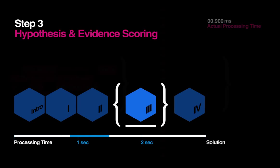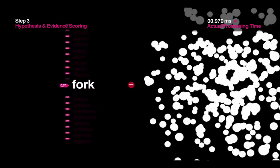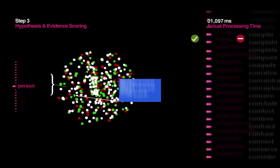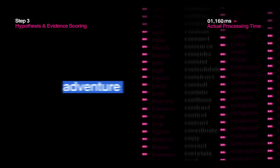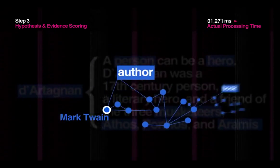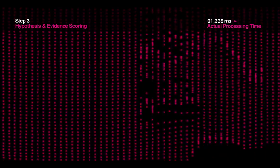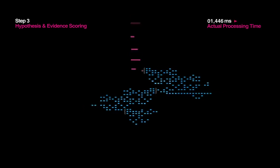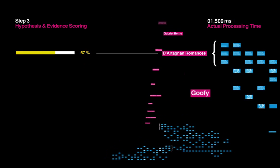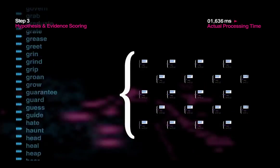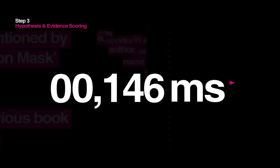Step 3: Hypothesis and Evidence Scoring. It's not enough for Watson to just come up with answers — it has to support and defend them. So after downgrading obviously wrong answers, Watson finds passages from many different sources to collect positive and negative evidence for all of the remaining possibilities. Watson understands these passages having learned the relationships between words, such as 'books have heroes' or 'authors create characters.' Scoring algorithms rate the quality of this evidence based on everything from the source material's reliability to whether the time and location appear correct. There are still hundreds of possible answers left, so thousands of algorithms work in parallel to score the evidence for each and every one of them — and this must happen in seconds.